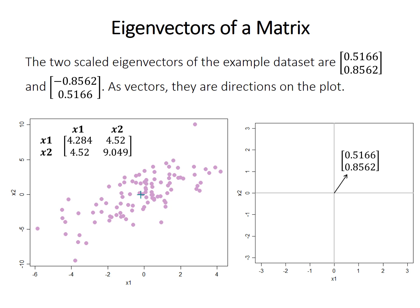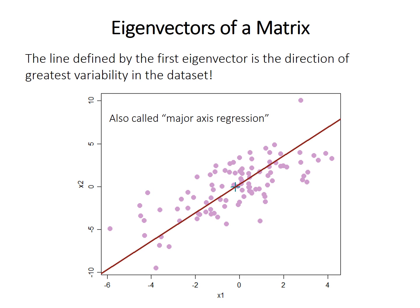Back to our first example. We can calculate the scaled eigenvectors of this example dataset, and they're given here. Remember that they can be used as directions on a plot, so the arrow on the graph shows the first eigenvector. Now we can see how the eigenvector becomes really useful: the line defined by this first eigenvector is the direction of greatest variability in the dataset.